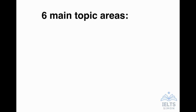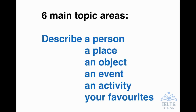This lesson is the fourth lesson in the series looking at Speaking Part 2. The six main topic areas are: describe a person, place, object, event, activity, and your favourites. And this lesson, as I said, is about describe an event.